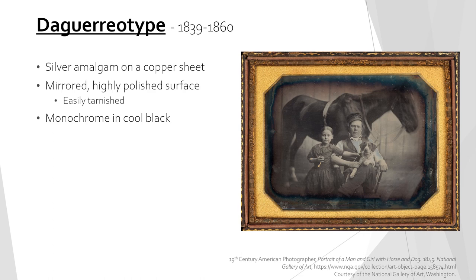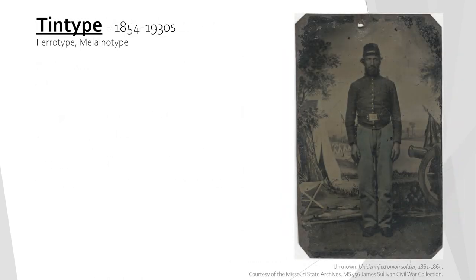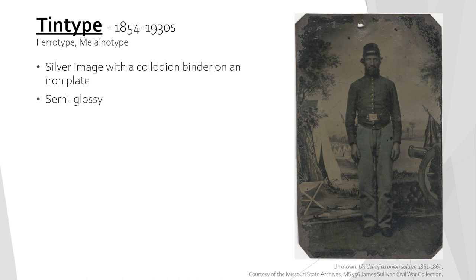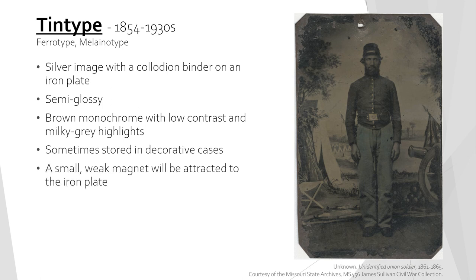The images are monochrome in a cool black and they have the unique feature of appearing as both a positive and a negative image depending on the viewing angle. They are typically stored in highly decorative hinged cases. Tintypes were used from 1854 to the 1930s. They consist of a silver image with a collodion binder on an iron plate. The surface has a semi-glossy sheen and the image is a brown monochrome with low contrast and milky gray highlights. They are often stored in decorative cases, but not always. A small weak magnet will be attracted to the iron plate, which may be useful for identification.